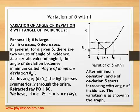This is called δₘ, the angle of minimum deviation. A further increase in the angle of incidence results in an increase in the angle of deviation. You can see from the graph that for small values of angle i, δ is large; as i increases, δ decreases. In general, for a given δ, there are two values of angle of incidence.